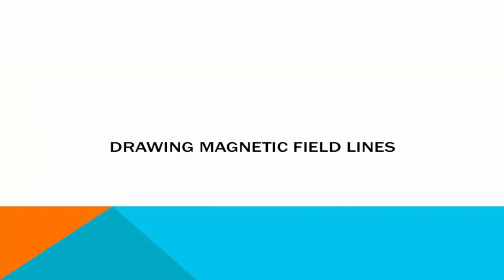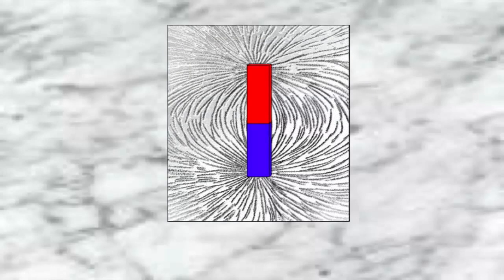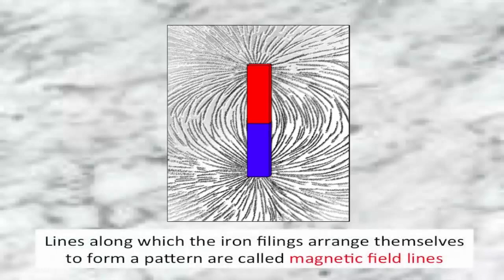Now let's look at how to draw these magnetic field lines. We take a marble top, place a paper on it, and sprinkle some iron filings on the paper. Next, we keep a magnet upon the paper. After some time, we find that all the iron filings arrange themselves into a specific pattern — in the form of lines going from one pole to another. These lines are what we know as magnetic field lines. Lines along which the iron filings arrange themselves to form a pattern are called magnetic field lines.